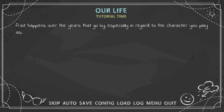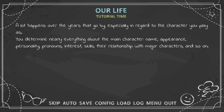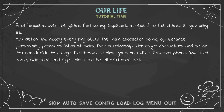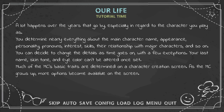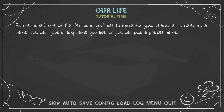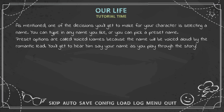A lot happens over the years, especially regarding the character you play as — you determine nearly everything about the main character: name, appearance, personality, pronouns, interests, skills, their relationship with major characters, and so on. You can decide to change details as time goes on, with a few exceptions: your last name, skin tone, and eye color can't be altered once set. One of the decisions you'll make is selecting a name — you can type any name or pick a preset 'voice name,' which will be voiced aloud by the romantic lead.